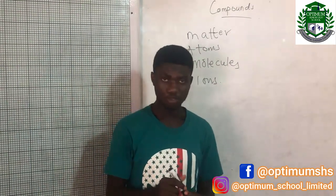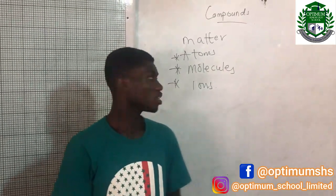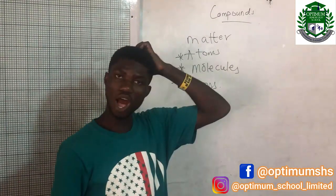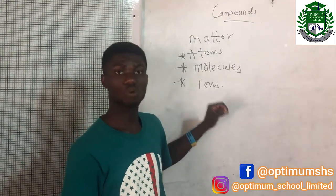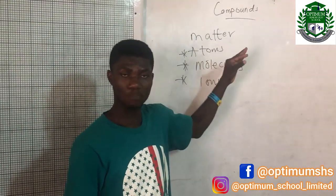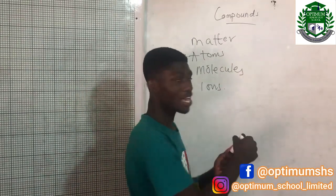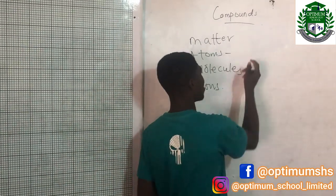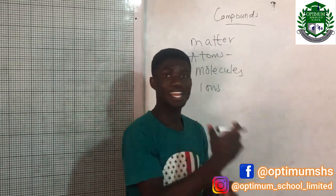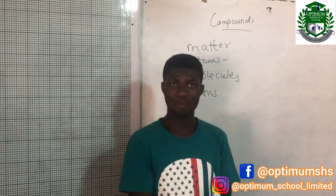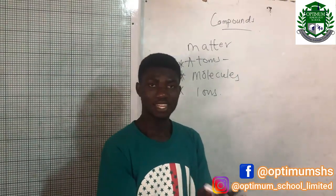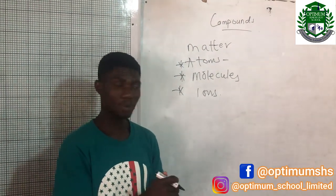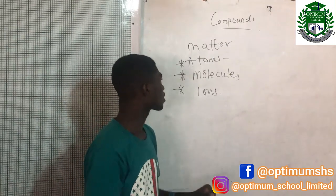Now, it would be important for you to know that all of these things — the molecules and the ions — they all have their reference points to be the atom. And so we say that the atom is the smallest particle of an element that can take part in a chemical reaction.